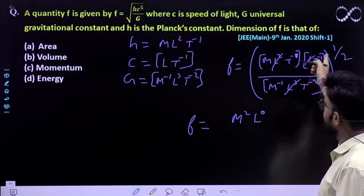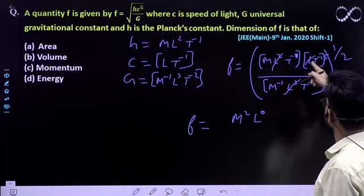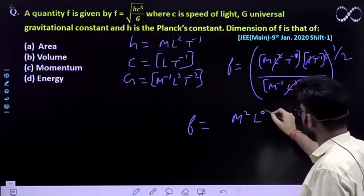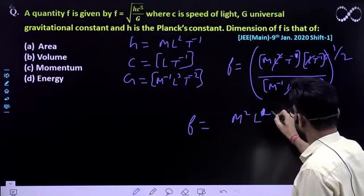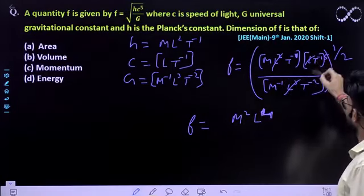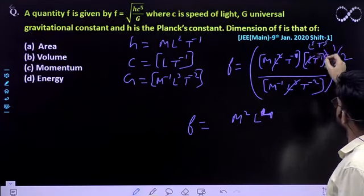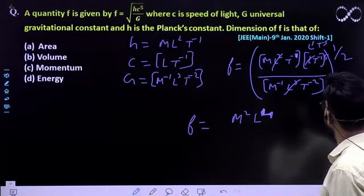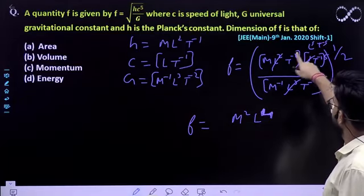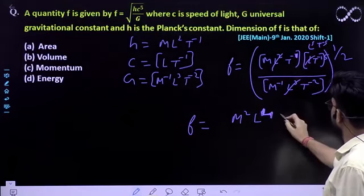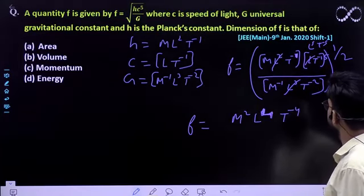Kyunki this was L⁵, then L² is 7, 7 minus 3 equals 4. Yeh aap ki value. This term would be equal to L⁵T⁻⁵. Further ab time ko solve karo. Time would be minus 5 plus 1, minus 6. Then time ki value minus 4 ho gayi. I hope this expression is clear to everyone.